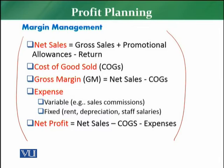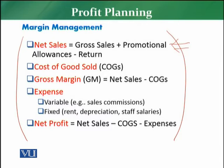The first component visible in this picture relates to net sales. Net sales is actually: gross sales plus promotional allowances minus sales returns. So any returns are subtracted, and promotional allowances are added. Net sales is actually the first component in the profit and loss statement.